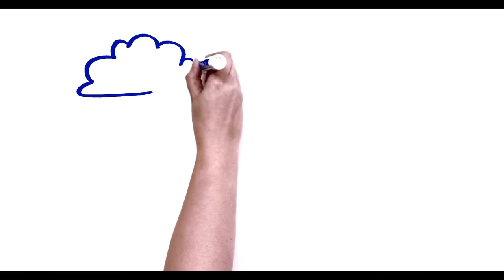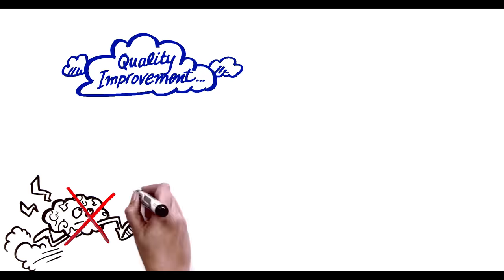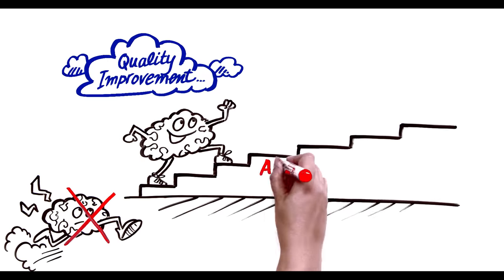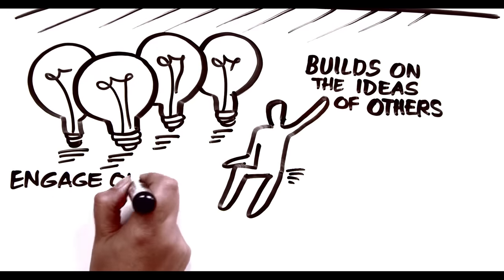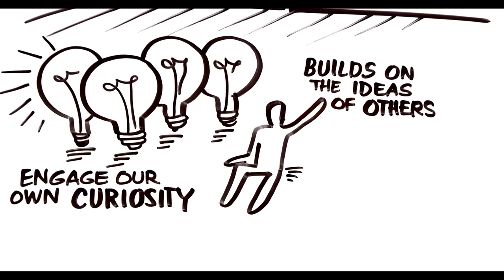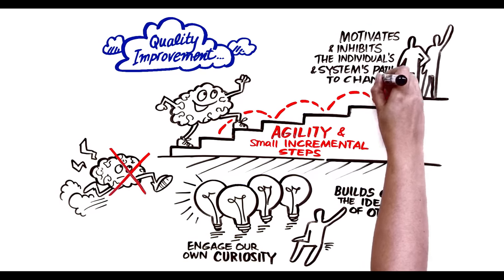All these point to the softer side of good quality improvement, that when we look at the science of innovation, it's less about big cognitive leaps and more about agility and small incremental steps that build on the ideas of others and engage our own genuine curiosity regarding what motivates and inhibits the individual and systems path to change.